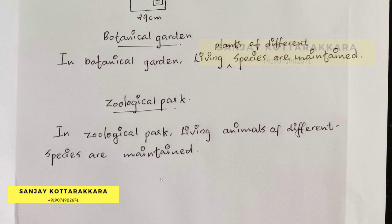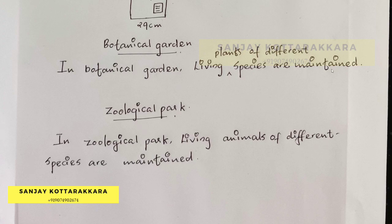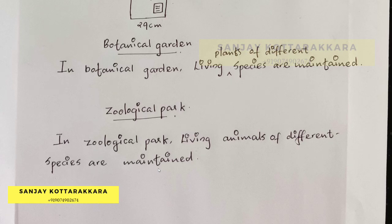Let's talk about Zoological Park and Botanical Garden. In Botanical Garden, living plants of different species are maintained. In Zoological Park, living animals of different species are maintained. The concept is very clear. In Zoological Park, they have different species of animals which are preserved and maintained.